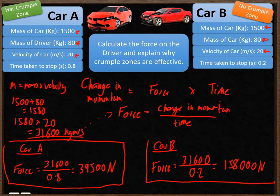As you can see, the force on the driver in car B is much greater than the force acting on the driver in car A. What that means is that the person in car B is likely to be more harmed than the person in car A.